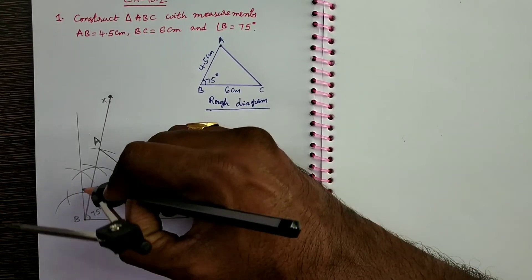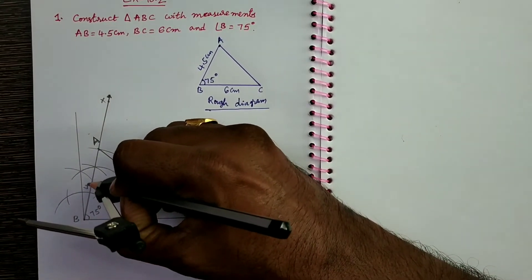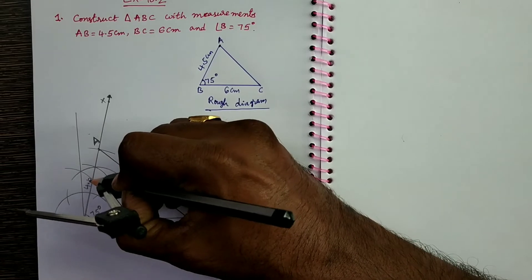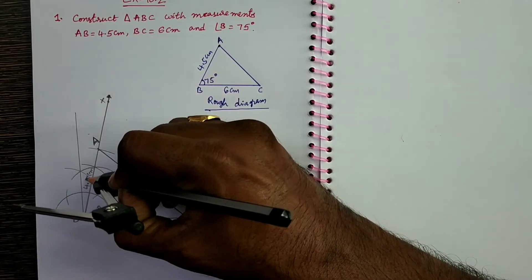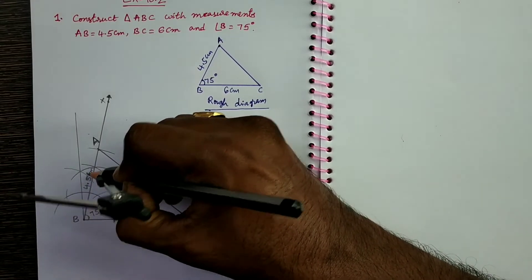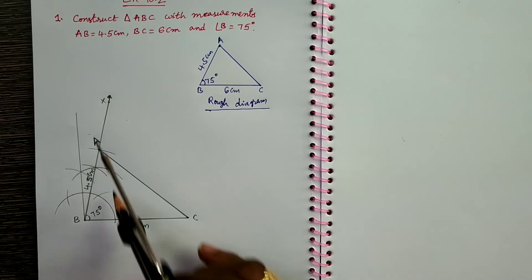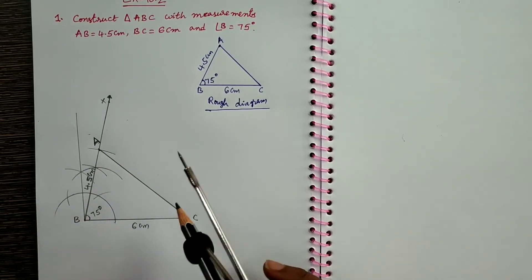Now join AC. This is the required triangle ABC. AB measurement is 4.5 cm. Mention the measurements. This is the required triangle ABC.